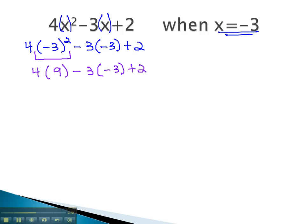Next, we multiply and divide from left to right. 4 times 9 is 36, minus 3 times negative 3, plus 2. Continuing to multiply, we have negative 3 times negative 3. We now have 36 plus 9, plus 2.